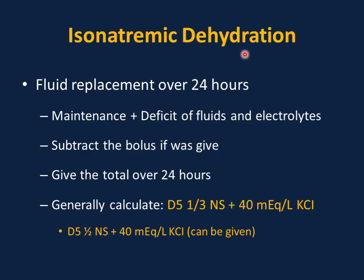To summarize isonatremic dehydration management: calculate maintenance plus deficit of fluid and electrolytes, subtract any bolus given, then give the total over 24 hours. This generally calculates to D5 one-third normal saline plus 40 mEq per liter of potassium chloride. Since D5 one-third normal saline is not widely available in many hospitals, it is acceptable and safe to use D5 half normal saline plus 40 mEq per liter of potassium chloride as the commonly used fluid for isonatremic dehydration.